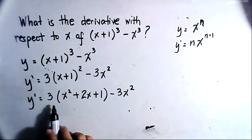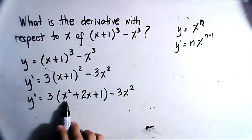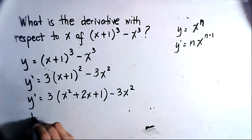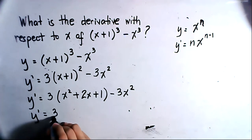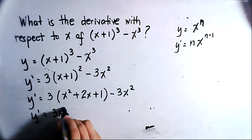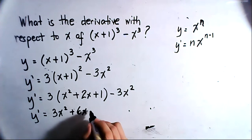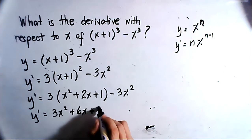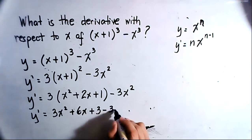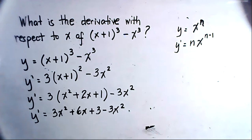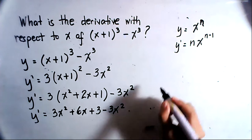And if we are going to distribute this numerical coefficient to the three terms inside the parenthesis, we would have y prime equals 3x² + 6x + 3 - 3x². And we are going to further evaluate y prime.